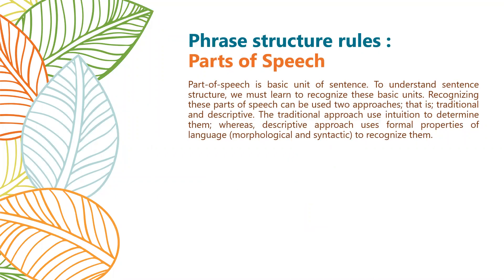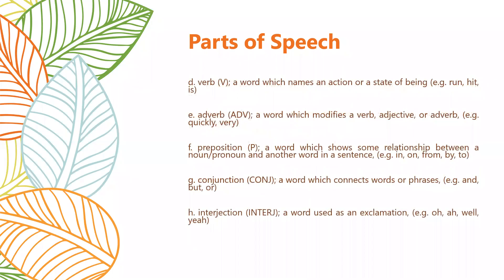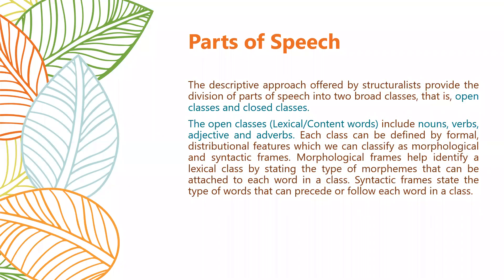When it comes to phrase structure rules, we need to think about parts of speech — the very basic units of a sentence. To understand sentence structure, we must learn to recognize these basic units. The traditional approach classifies words into: noun, pronoun, adjective, verb, adverb, preposition, conjunction, and interjection. These are the traditional way of classifying words.